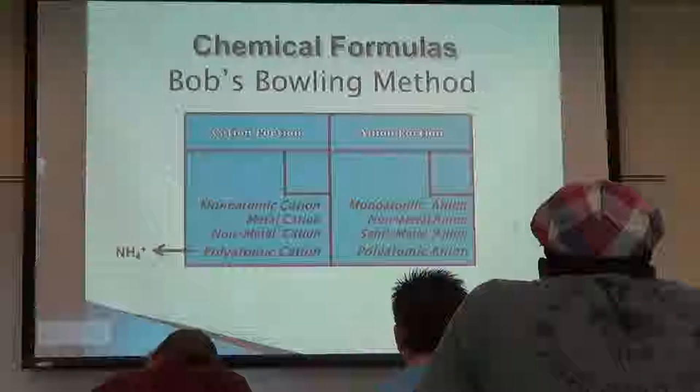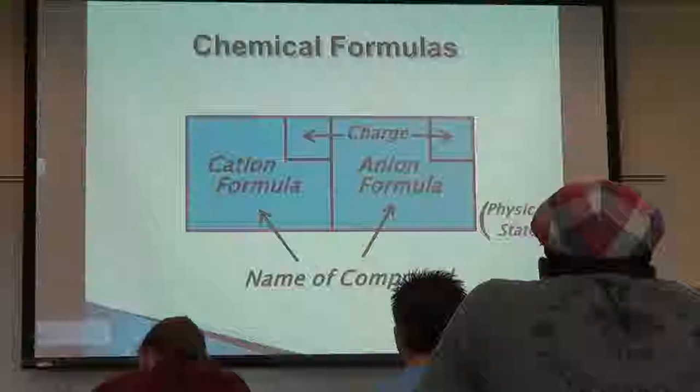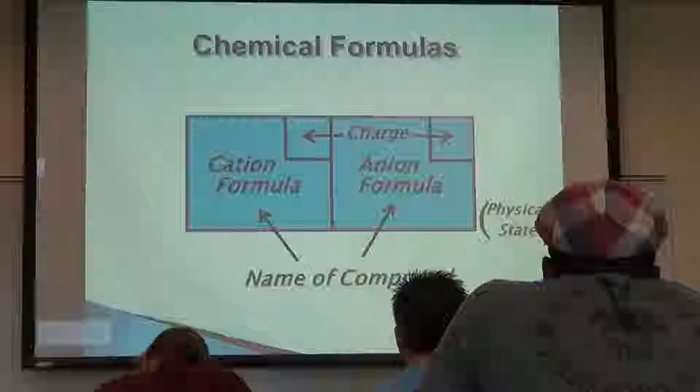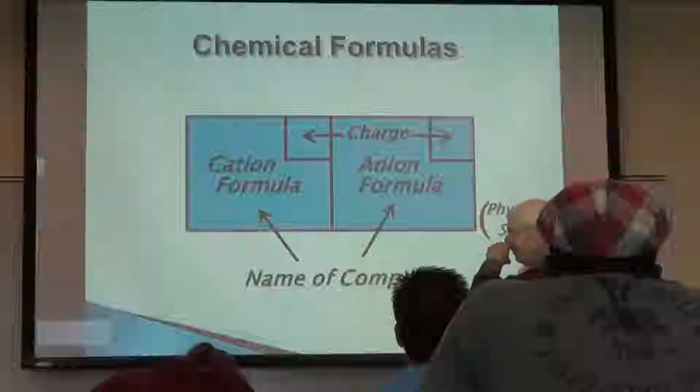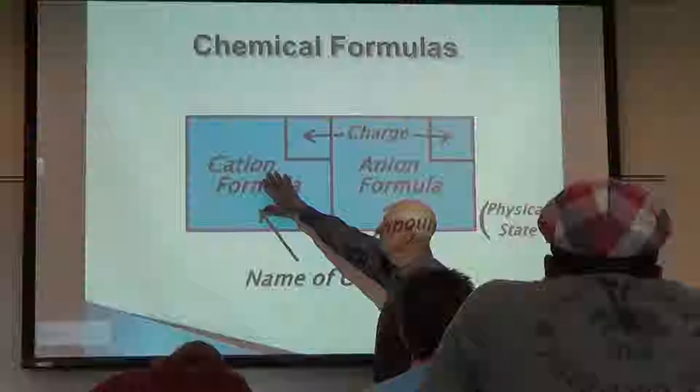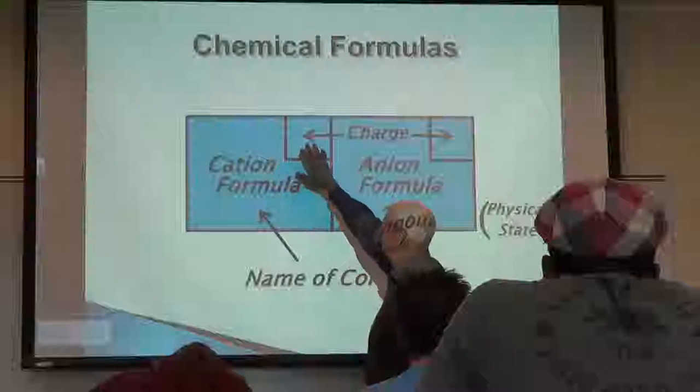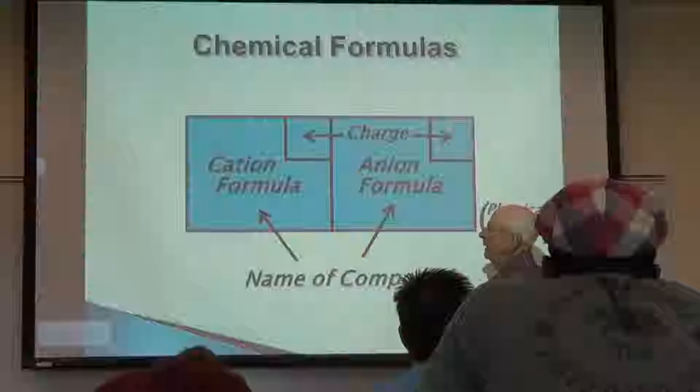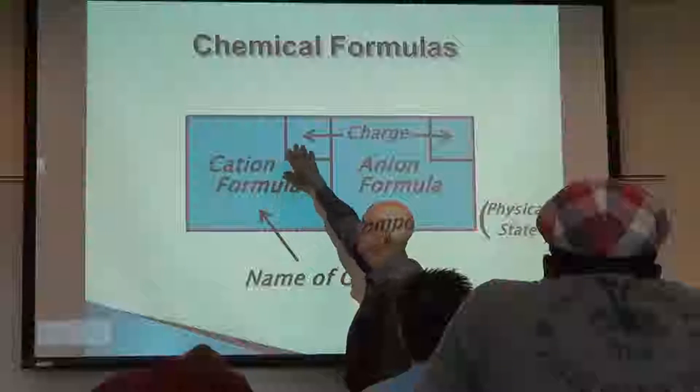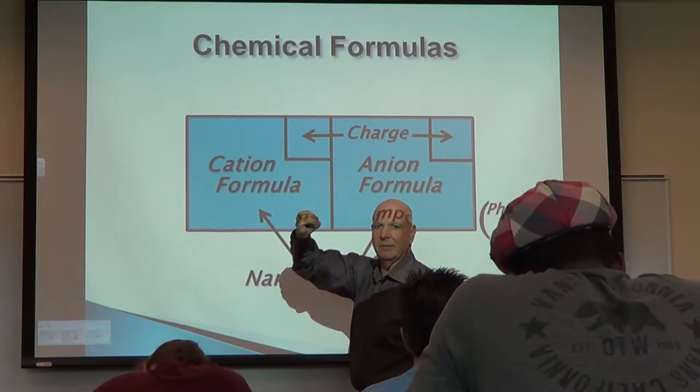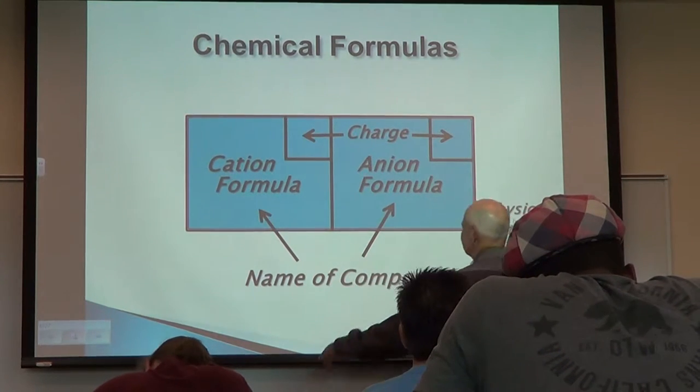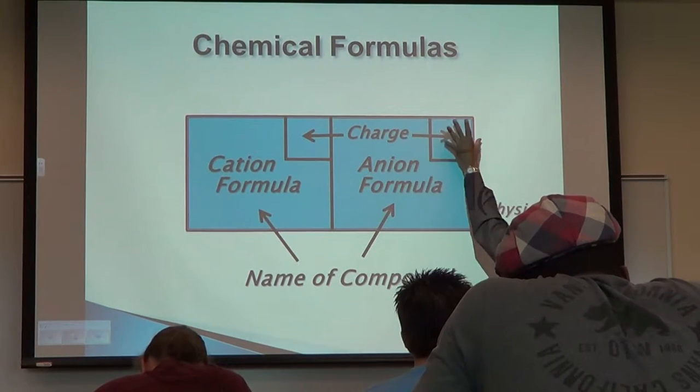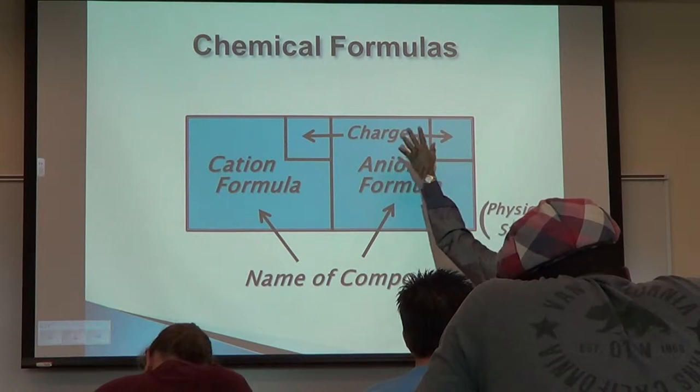The anion portion, that negatively charged ion portion, also can be monoatomic, a non-metal. It can be a semi-metal anion or a polyatomic anion. What you'll find is a lot of polyatomic anions in the compounds that we're going to be using for the next couple of weeks. Each of the ions, the positively charged half and the negatively charged half, have two things: they have a formula, symbol or formula, and a charge. I write the name of the compound underneath. We look up the formula and the charge in the inside back cover of the book.